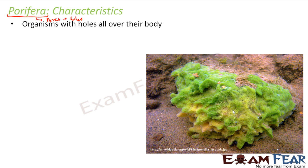If you look at this picture, this is an example of a Porifera. It doesn't even look like an animal, but it is an animal. Porifera were the most ancient form of animals. They didn't have specific features like eyes, nose, or ears, but they were categorized as animals because they satisfied the basic characteristics of Kingdom Animalia — they are mobile, multicellular, eukaryotes, heterotrophic, and do not have a cell wall.